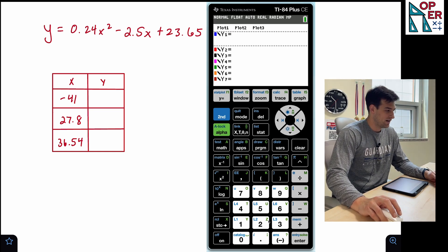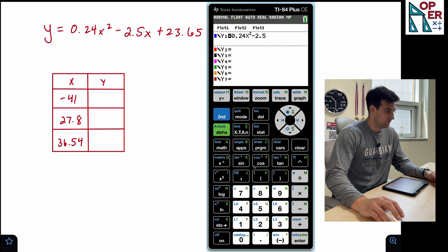So let's go ahead and graph that in the calculator. 0.24x squared minus 2.5x plus 23.65.